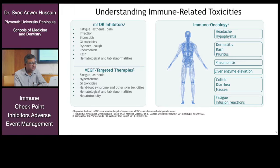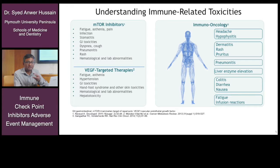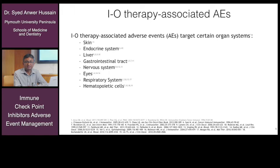In the lungs, pneumonitis can occur. Liver enzyme abnormalities with hepatitis have also been reported in patients on immune checkpoint inhibitors. In the bowels, colitis, diarrhea, and nausea have been seen and reported. Fatigue and infusion reactions have been reported with these drugs as well. So there are multiple side effects across different organs: skin, endocrine system, and liver.